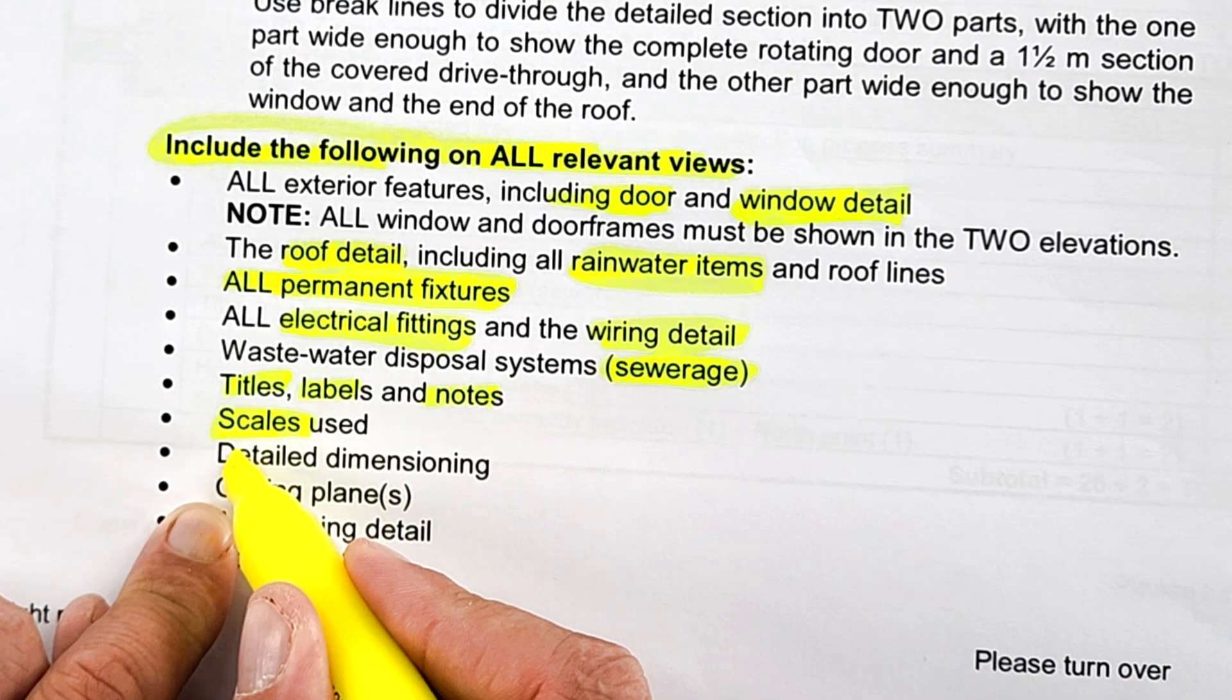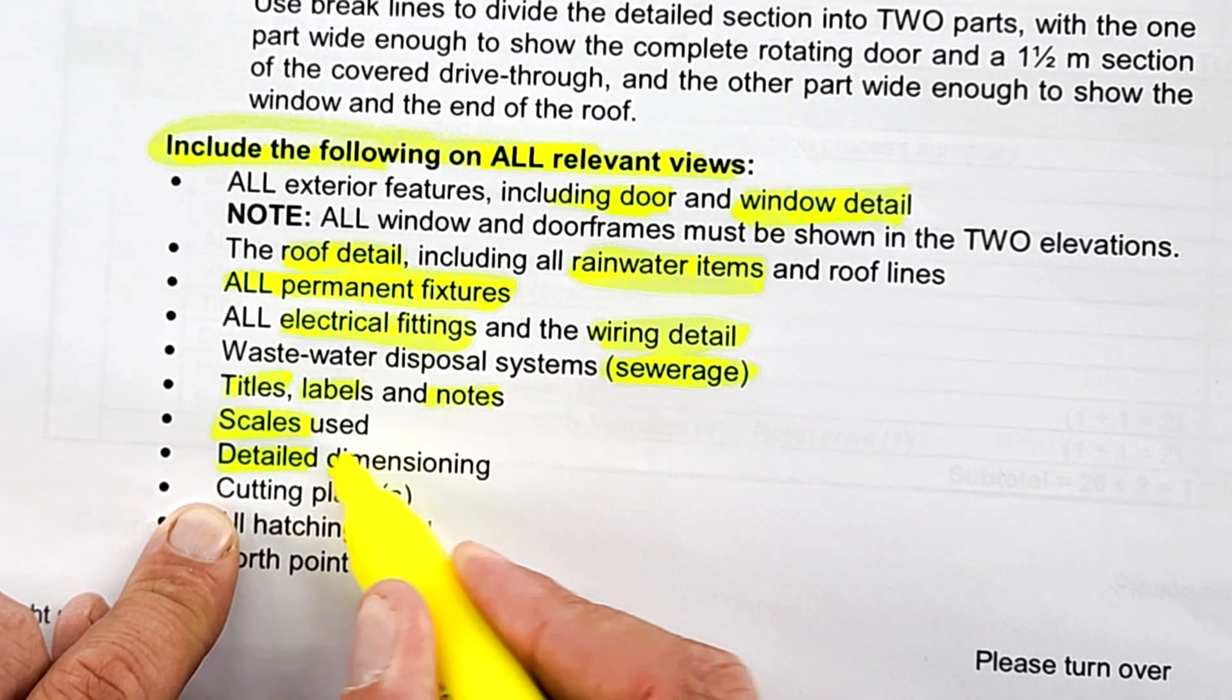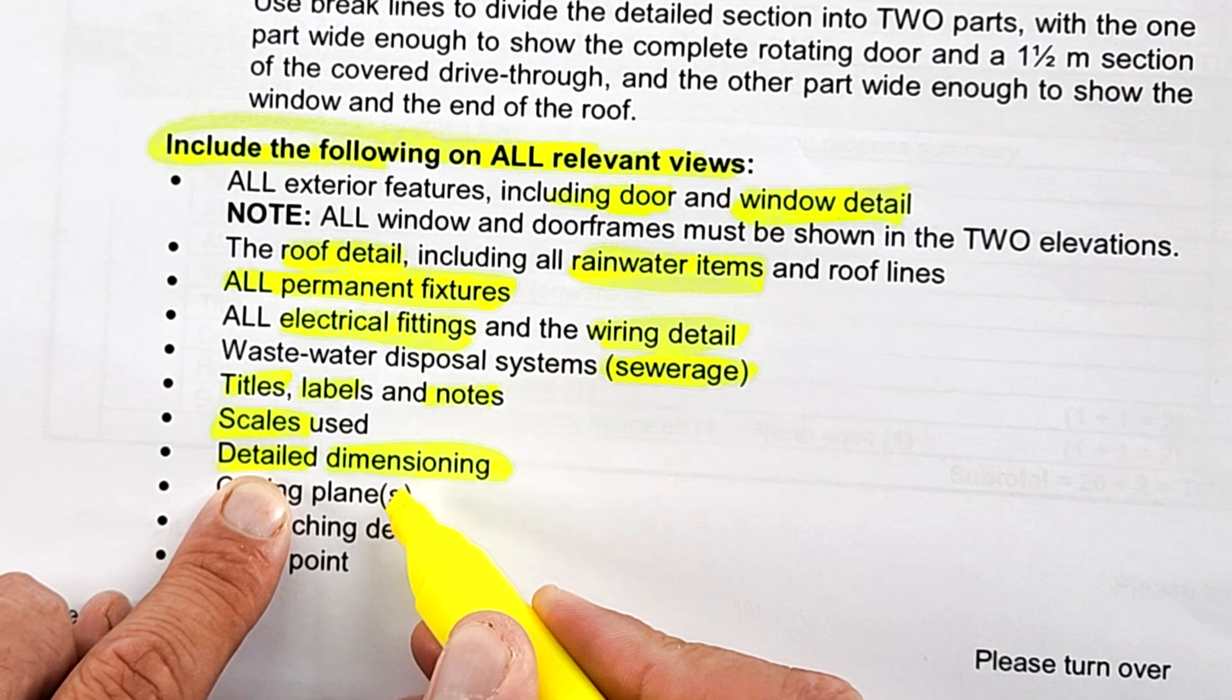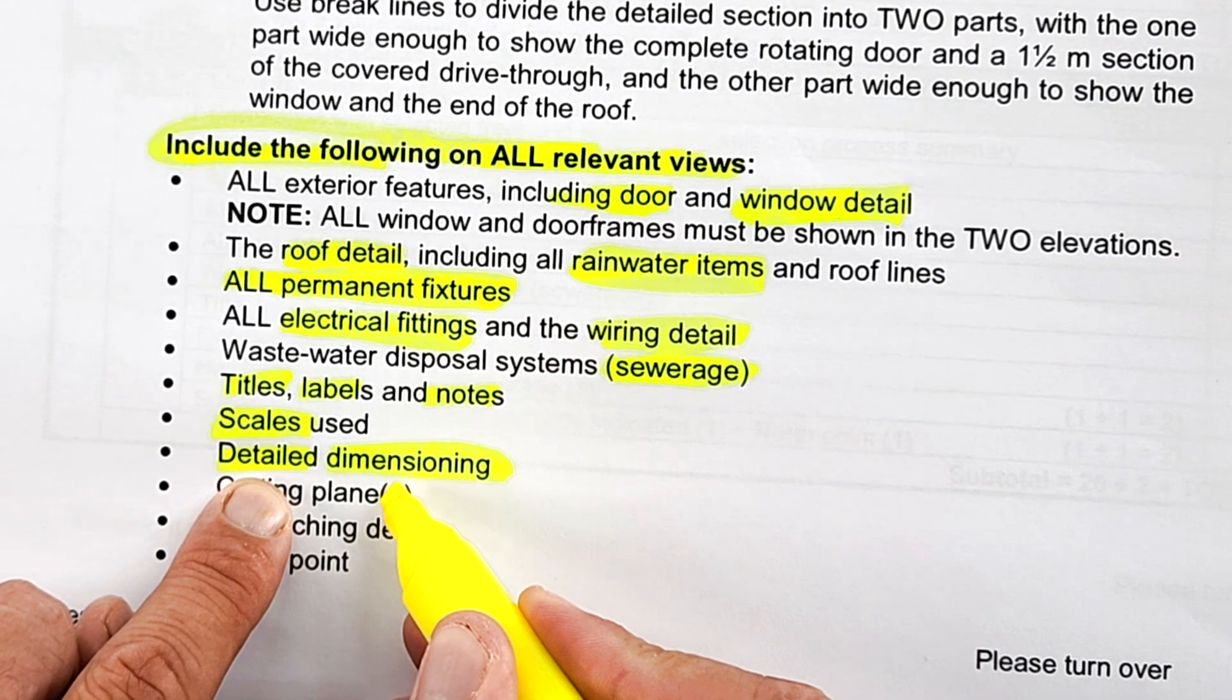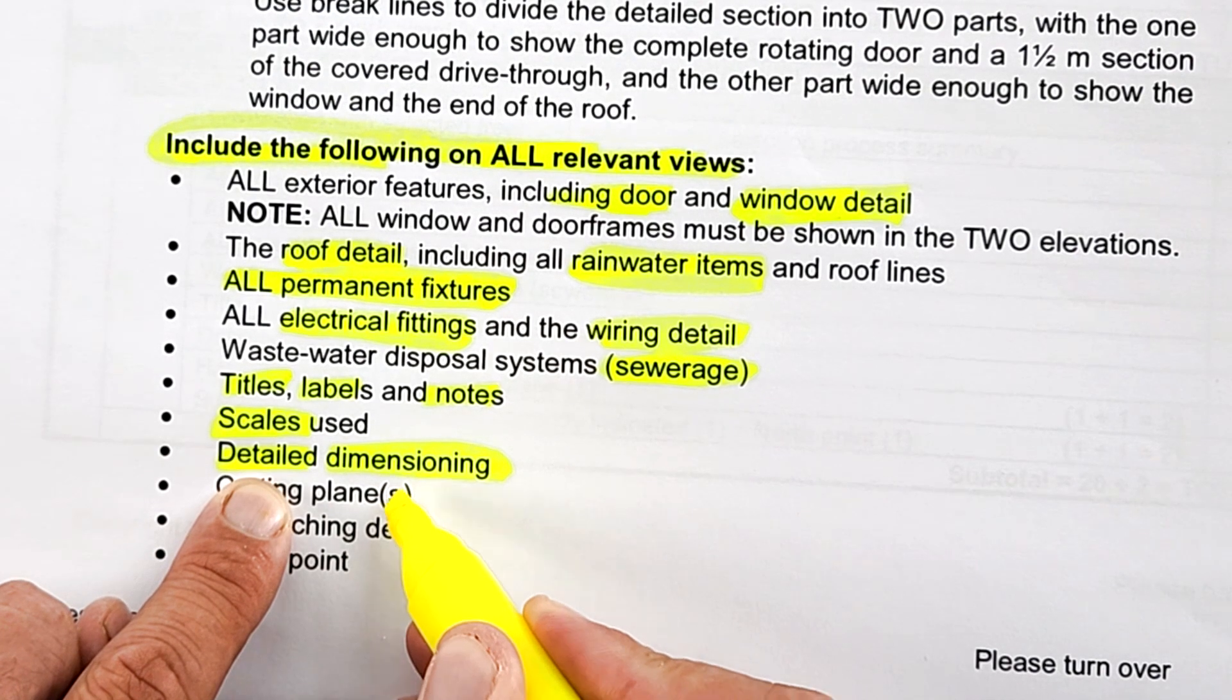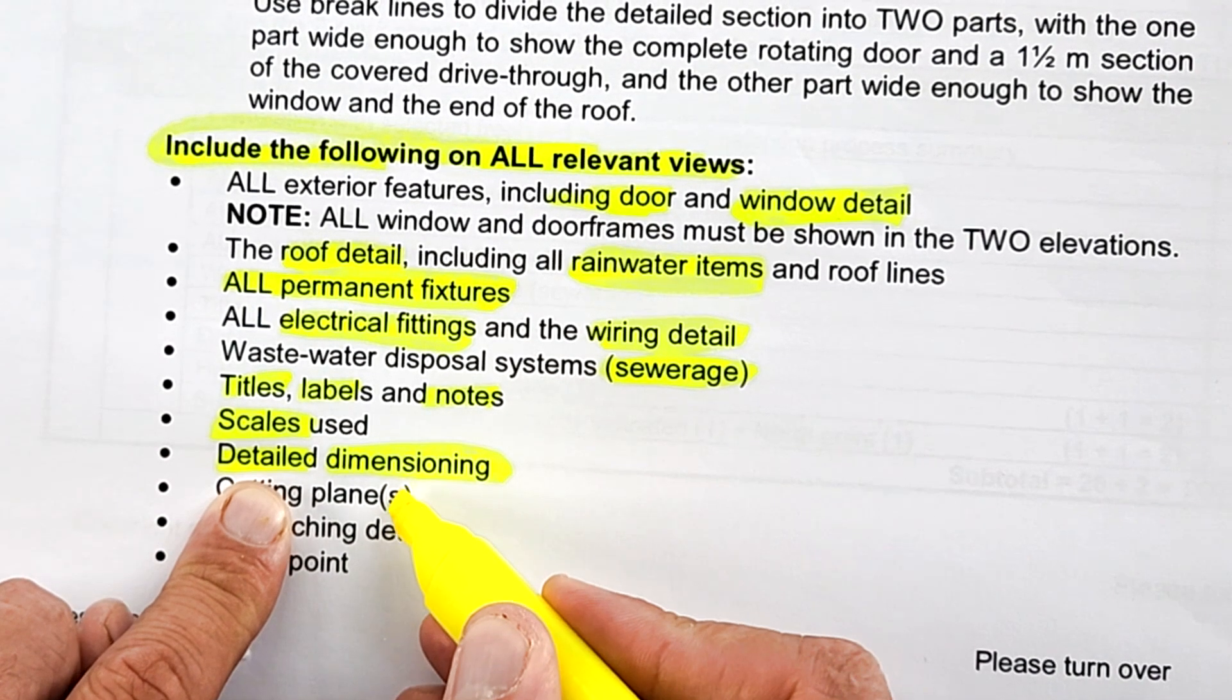All your titles, labels, and notes need to be clear. Your scale needs to be indicated. You have to have detailed dimensioning, so it's different from the freehand drawings we just did with primary dimensioning. This dimensioning needs to conform so that a contractor can actually build this building.